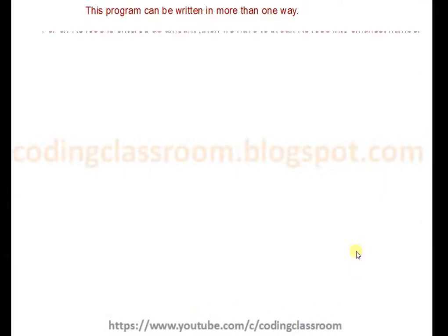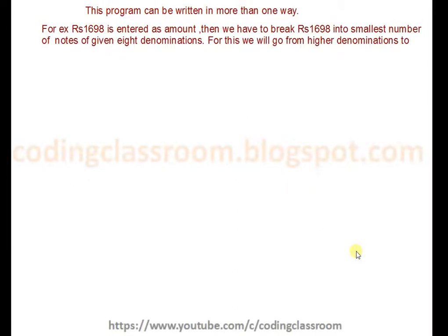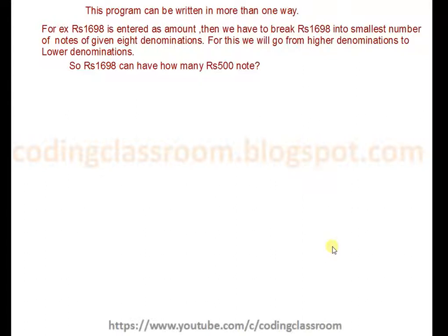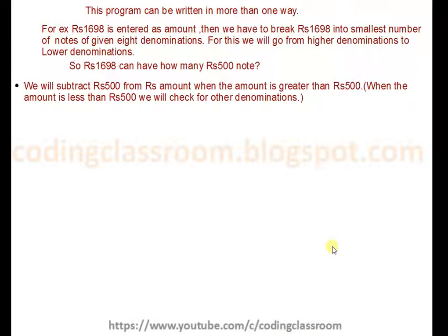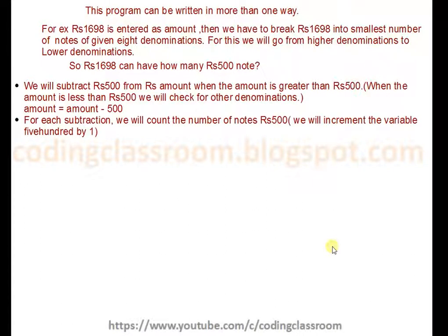For rupees 1698 entered as the amount, let's calculate how many notes of which denominations we need. We start from higher denominations in order to get the smallest number of notes. Rupees 500 is the highest denomination note we have, so we subtract it from rupees 1698 and keep subtracting till the amount becomes less than rupees 500, then check other denominations. For each subtraction we count the number of notes of that denomination and increment the variable associated with it, so we increment variable 500 by 1.